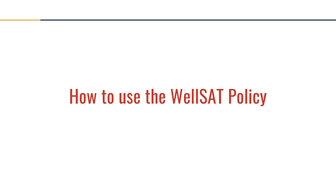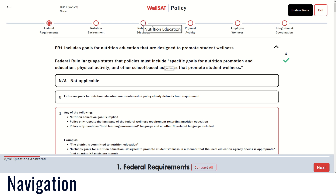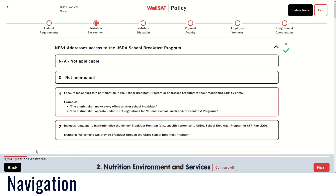Now let's look at how to navigate the WellSAT policy tool. The WellSAT has six sections: Federal Requirements, Nutrition Environment and Services, Nutrition Education, Physical Education and Physical Activity, Employee Wellness, and Integration and Coordination. You can navigate between these sections by clicking on the circles at the top of the page or the next and back buttons at the bottom of the page.